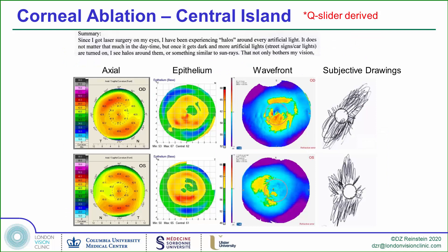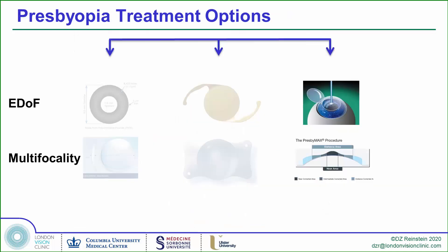Adjusting the Q slider has been used to target postoperative negative Q factor, but in myopic ablations this causes a bifocal cornea with central islands, which significantly increase unwanted aberrations and cause loss of visual quality.